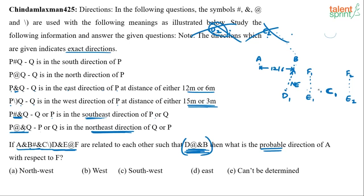Now, what is the probable direction of A with respect to F? Focus only on A and F — the intermediate distances don't matter. Looking at the diagram, A appears to be between north and west of F, so one possibility is northwest. A with respect to F is northwest.